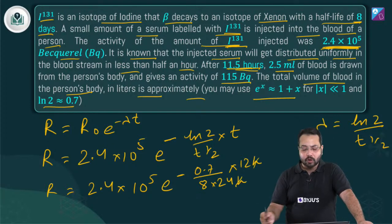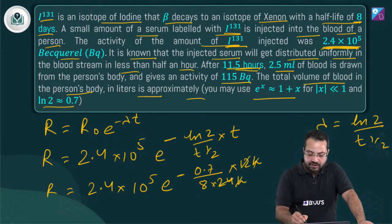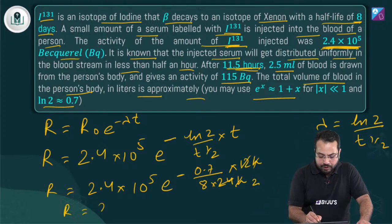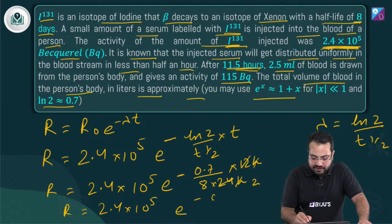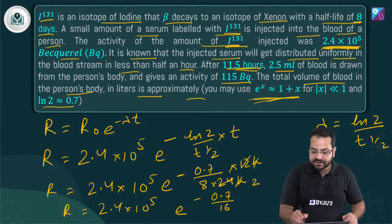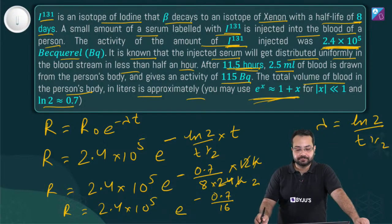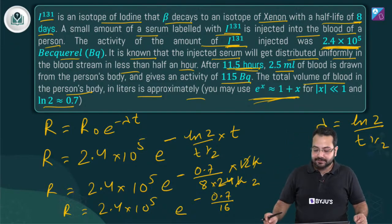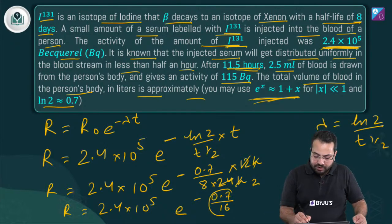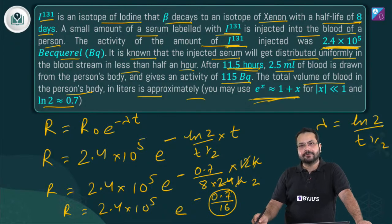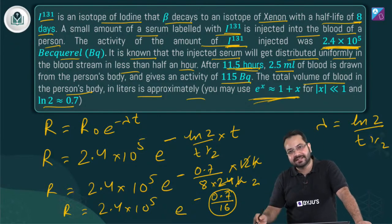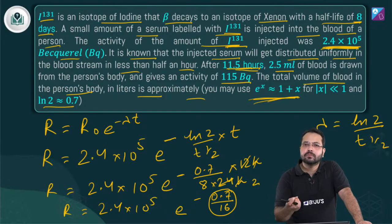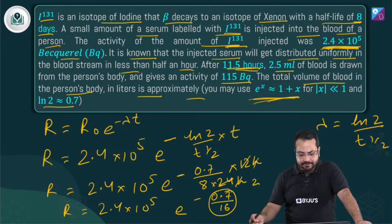Solving: V = (2.4×10⁵ × 15.3/16 × 2.5×10⁻³) / 115 ≈ 5 liters. The volume of blood is approximately 5 liters. This question has been asked many times in JEE with different data — good to revise and remember. Any confusion, please ask. Let us move to the next problem.